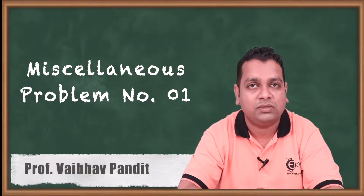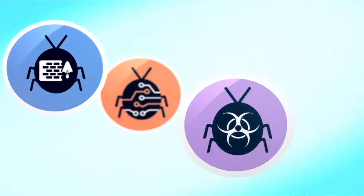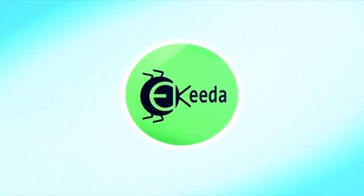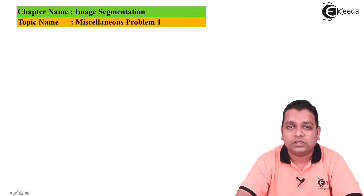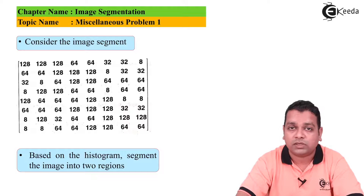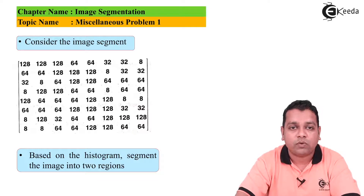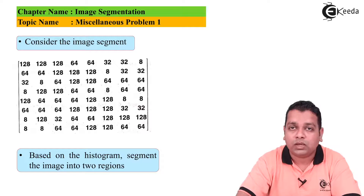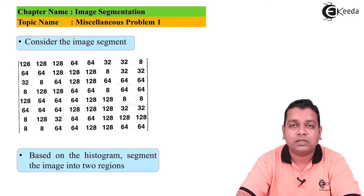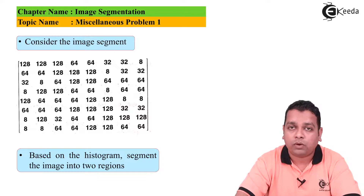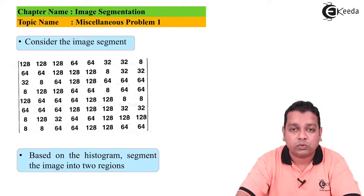Now let us work through one more problem to conclude this chapter — miscellaneous problem number one. The problem statement asks us to consider a given image segment. The image segment has eight rows and eight columns, so 64 pixel intensity values are arranged in matrix form. For this given image segment, based on the histogram, we have to segment the image into two regions.